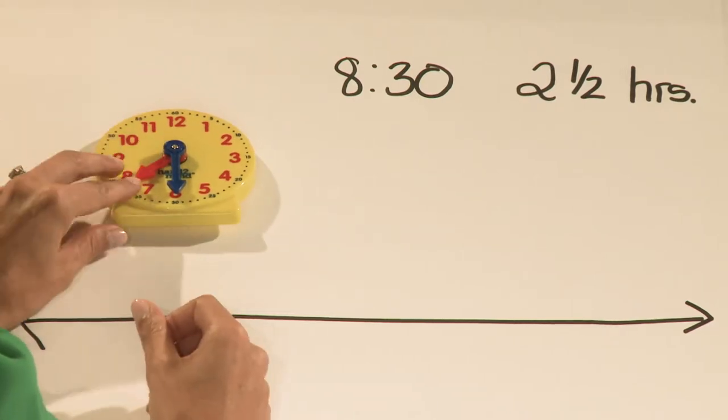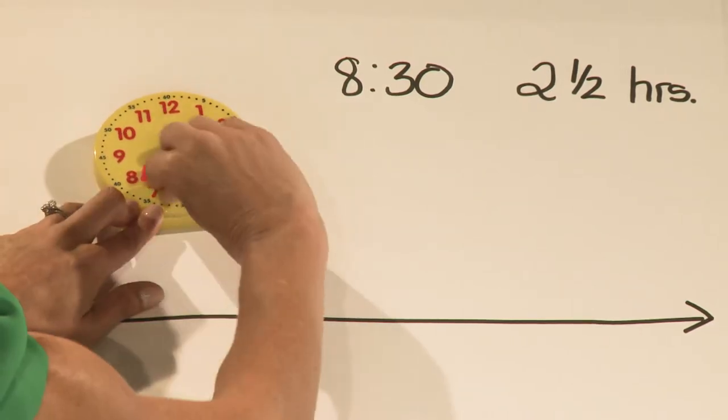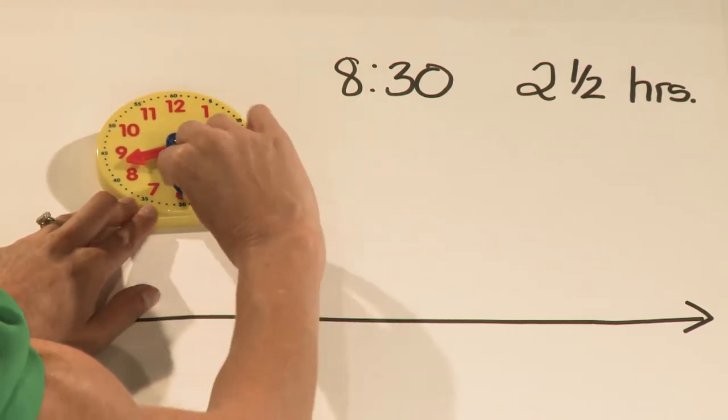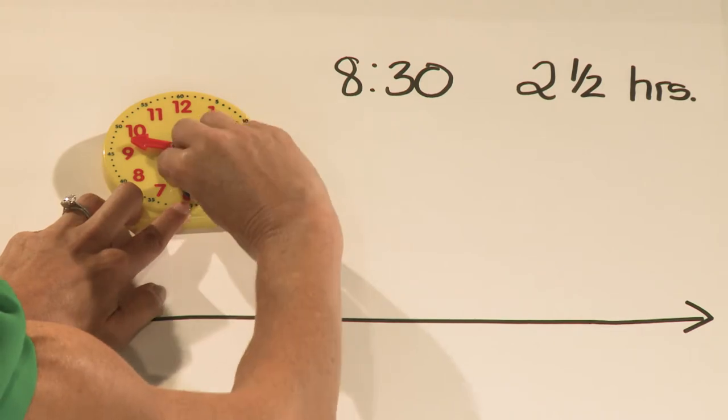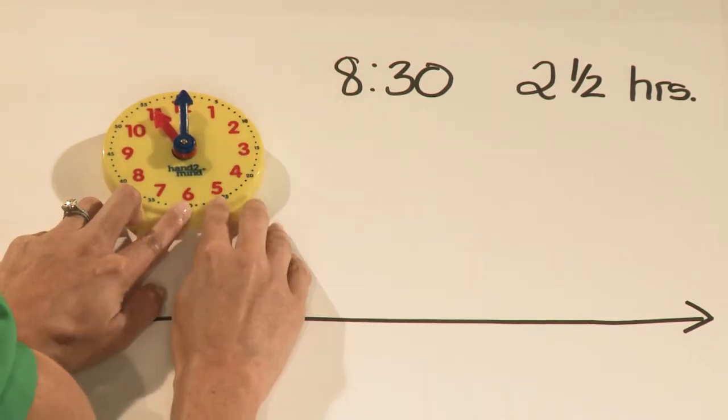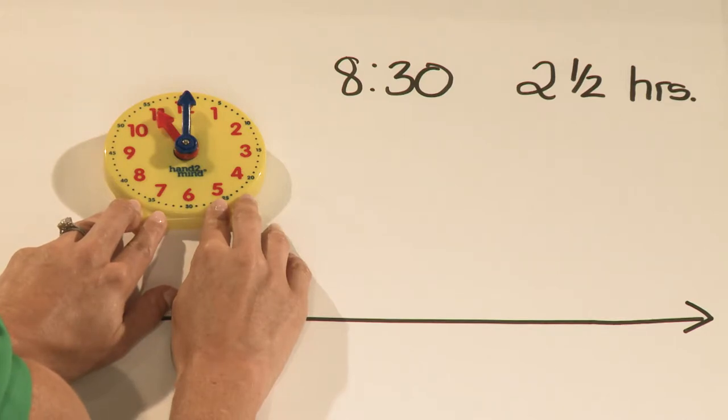We can first use our clock by setting it to 8:30, and then add our two and a half hours. One hour, two hours, and a half hour. So Mike stopped reading at 11 o'clock.